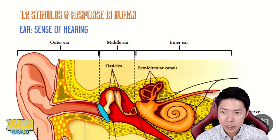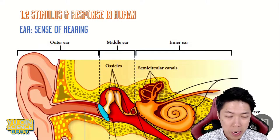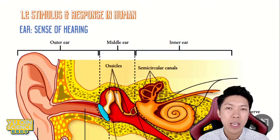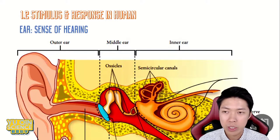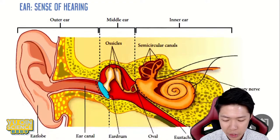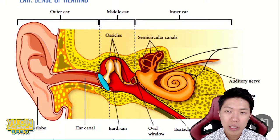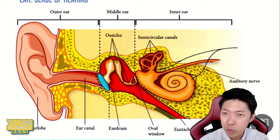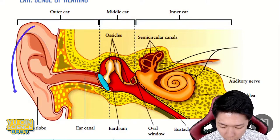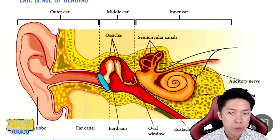We will be starting off with labelings. Your ears are separated into three sections, which is the outer ear, middle ear, and inner ear, as you can see labeled above already. Outer ear consists of two parts, which is the earlobe and ear canal.